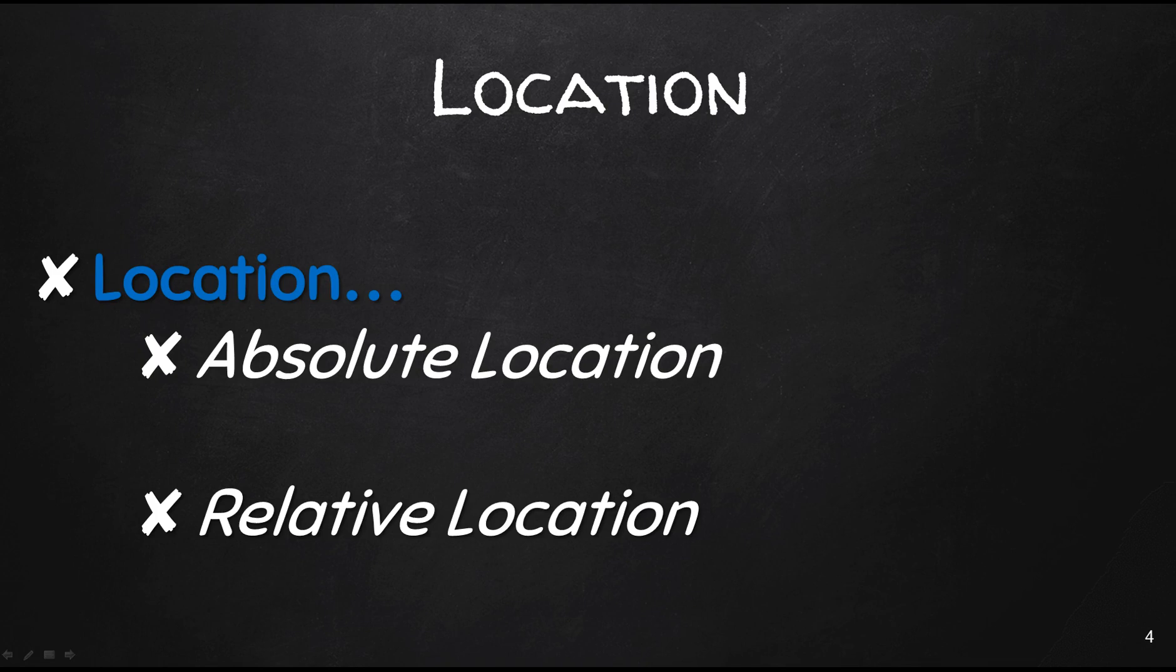So geographers can describe the location of a place in one of two ways, either absolute or relative. Absolute location describes the location of a place based on a fixed point on Earth. So the most common way is to identify the location using coordinates, such as your latitude and longitude.